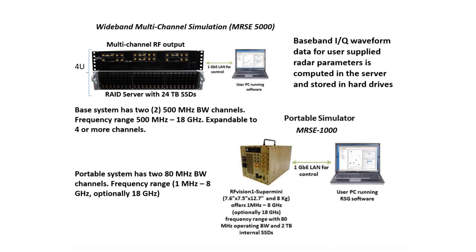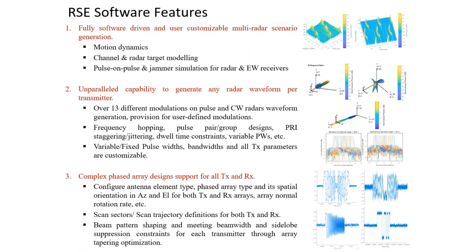The software is entirely executed within the RAID servers within these platforms, and the host machine — a PC or laptop — is used for transmitting the input data structures that define the scenario. The multi-channel radar signal emulator system is capable of simulating motion dynamics between the radar platforms, which are the transmit platforms, receiver platforms, and radar targets. Every modeled radar transmitter, receiver, and target has its own initial location, velocity, and acceleration defined in XYZ components.